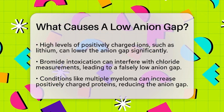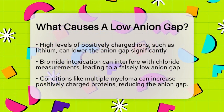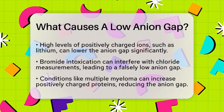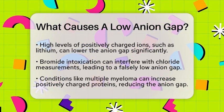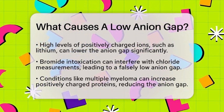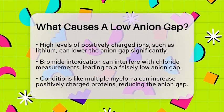Additionally, conditions like multiple myeloma can increase the levels of positively charged proteins in the blood, which can also reduce the anion gap.